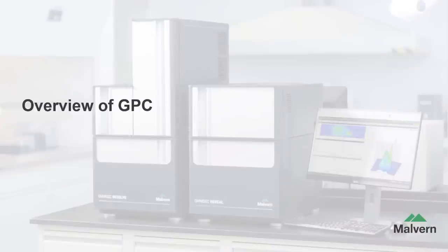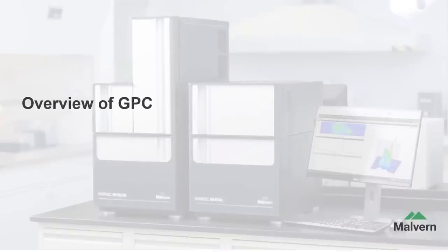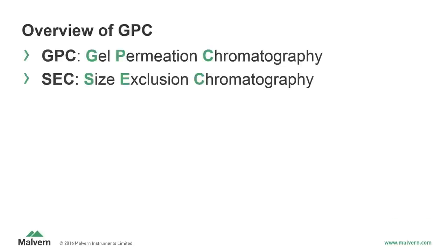First, let's start with an overview of GPC. GPC stands for gel permeation chromatography. GPC is a type of size exclusion chromatography, often abbreviated SEC. While GPC refers to a specific type of SEC, the two are very similar and are often used interchangeably, as GPC is the most common type of SEC.